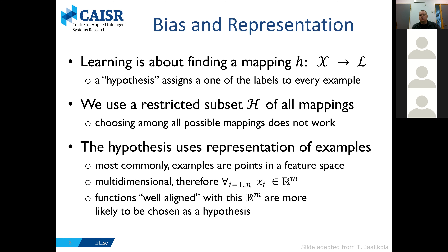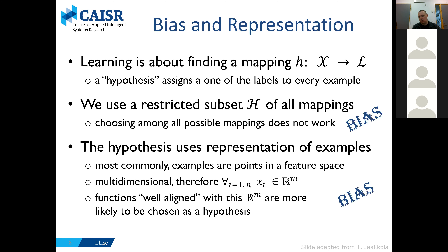Whatever functions look nice in a particular feature space are more likely to be chosen as a hypothesis. This means there are two types of bias: one is what types of hypotheses you allow or prefer, and the other is how the representation you use for your examples aligns with the hypothesis space. These are important considerations we will explore further.